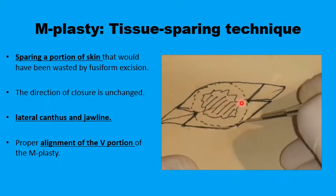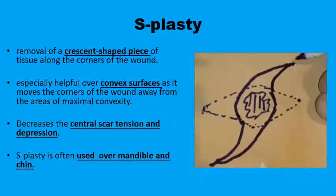The wound heals in an almost straight line with two smaller extensions on both sides — no dog ears and minimal tension — though you must be very careful when suturing the three-point junctions. This is much like the conventional elliptical excision of a lesion with a safety margin to prevent dog ear formation.